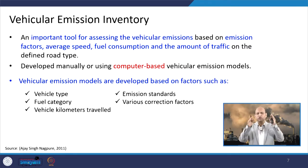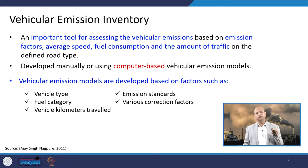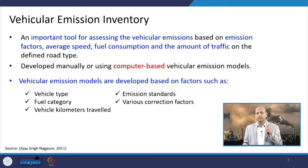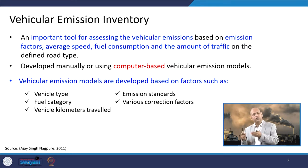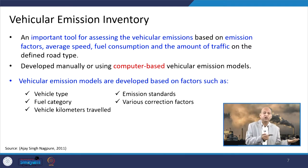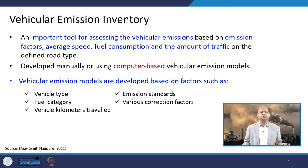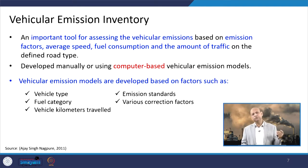When we focus on vehicular emission inventory, we need different kinds of input data: what kind of vehicle it is — whether it is light duty vehicle, heavy duty vehicle, 2-wheeler, 3-wheeler, 4-wheeler — then the technology, whether it is a 2-stroke engine or 4-stroke engine. So much data is required for estimating realistic emissions.